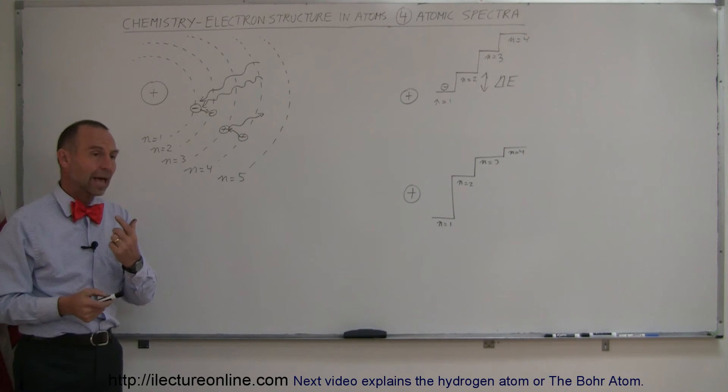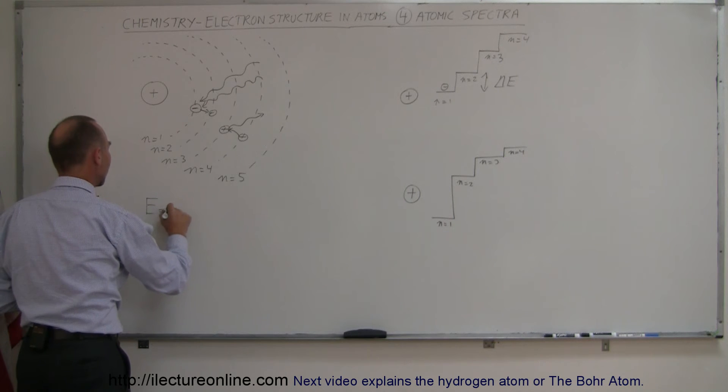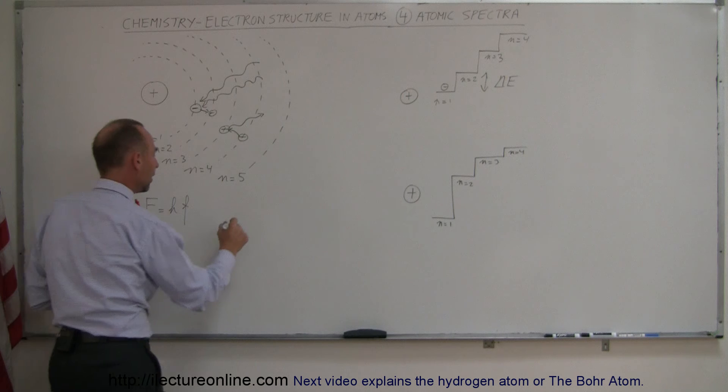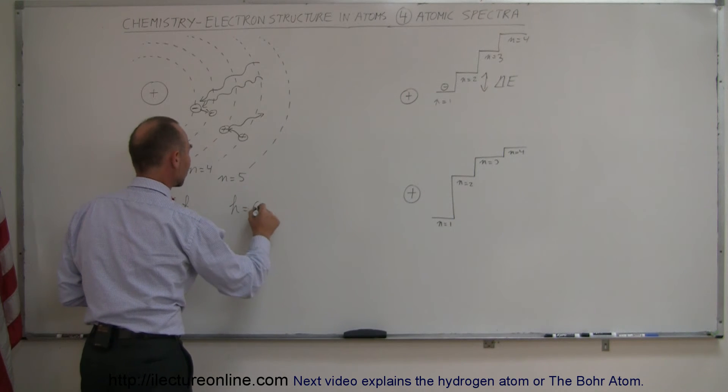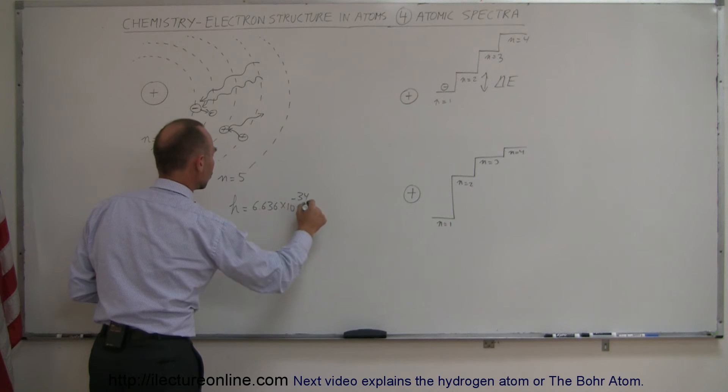So, now here we have photons and the energy of each photon is equal to H times the frequency. Remember Planck's constant times the frequency. Planck's constant H is equal to 6.626 times 10 to the minus 34 joules times seconds.